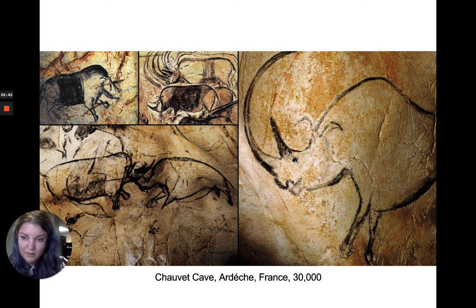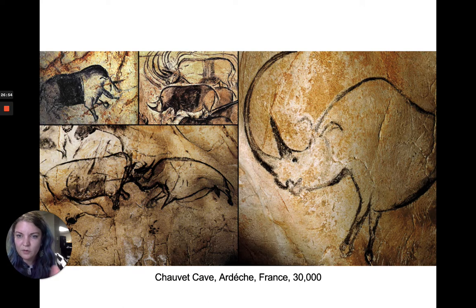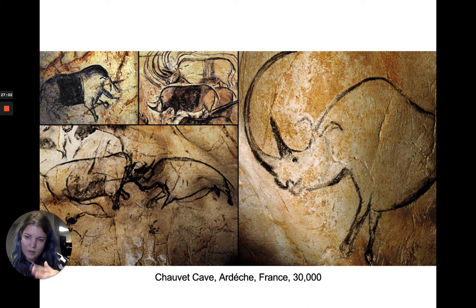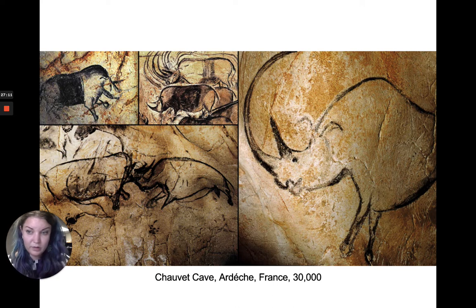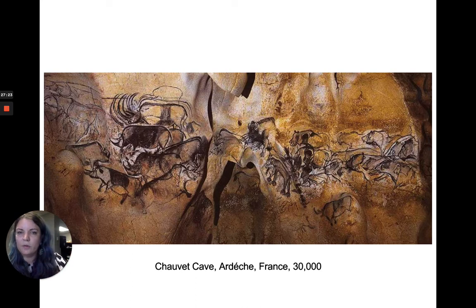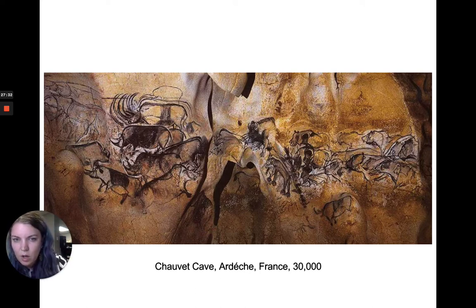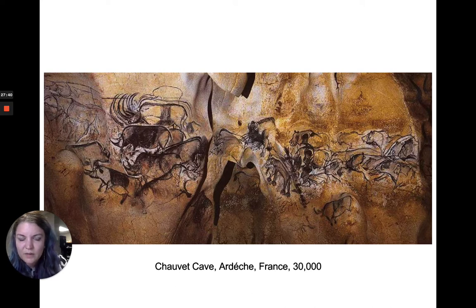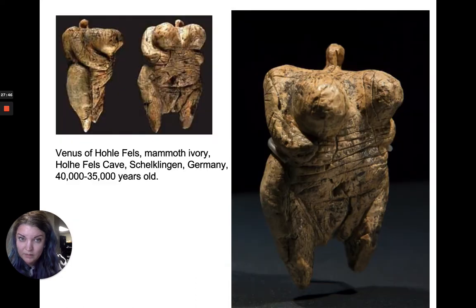Chauvet also depicts Ice Age rhinoceroses, which were in Europe at this time. We have an action shot of two rhinoceroses fighting, and in one image the horn is depicted multiple times to show movement — a very advanced concept of capturing motion in a still drawing not seen in art again until the early 20th-century Futurists. Zooming out on the wall, you can see all the lions, the rhinoceroses, things that look like warthogs, and even a small elephant. Elephants and mammoths were also in Europe at this time.